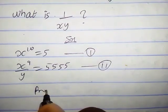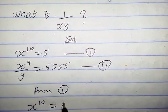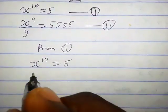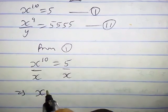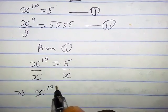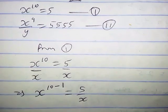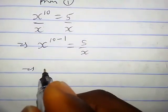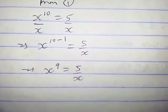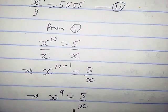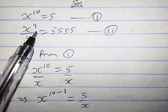Now from equation 1, we have x raised power 10 equals 5. Let's divide both sides of this equation by x, so we're gonna have x raised power 10 minus 1 equals 5 over x. This implies x raised power 9 equals 5 over x. So x raised power 9 we can plug into equation 2.